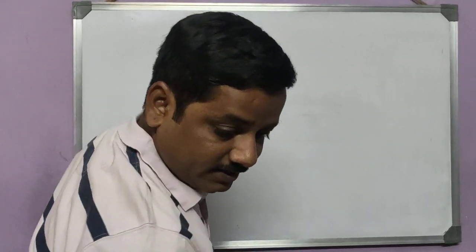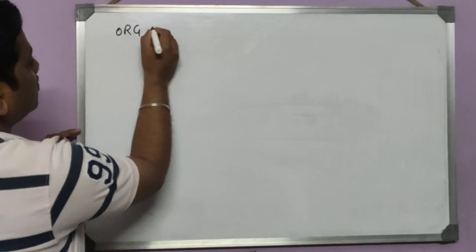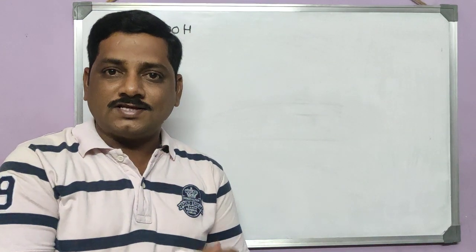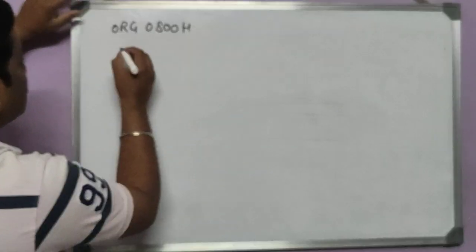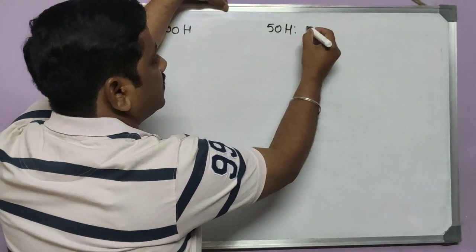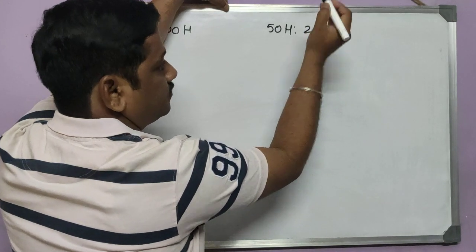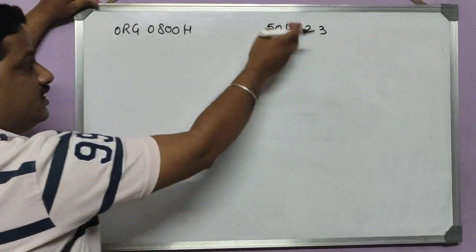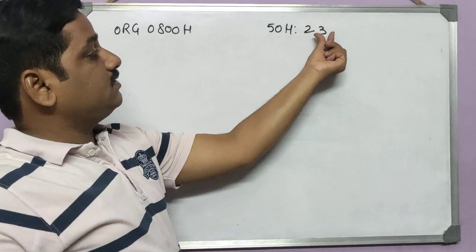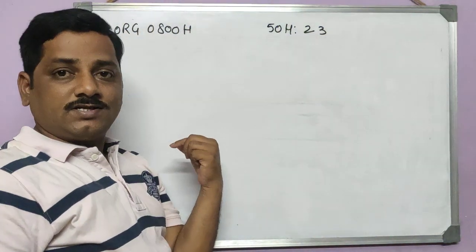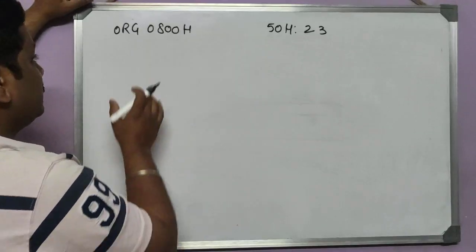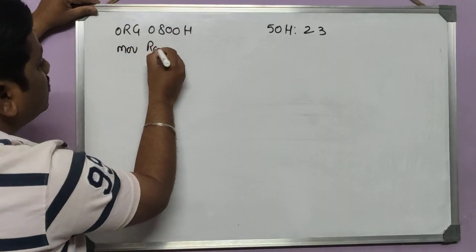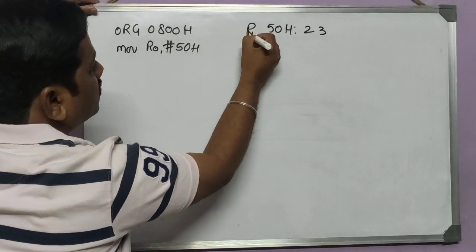Let us start the program. We begin with ORG at 800H. The input number to convert into ASCII is stored at location 50H — I will give the input 23H there, meaning the two BCD digits are 2 and 3. I assign register R0 to address 50H using MOV R0, #50H, so R0 now points to the input location.